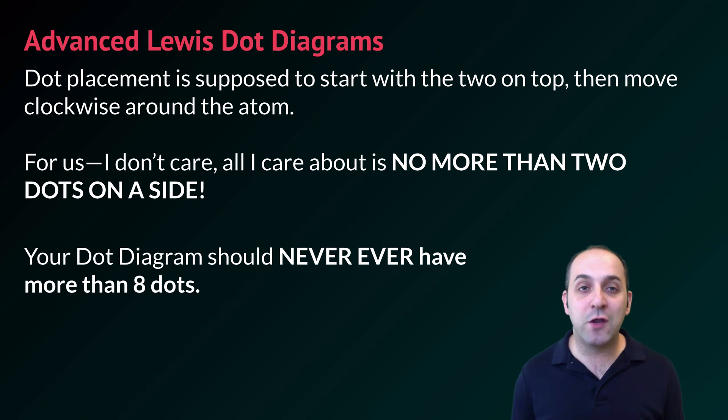Your dot diagram should never have more than eight dots. No element on the periodic table has more than eight valence electrons. If you find yourself putting down more than eight dots, something has gone horribly wrong. You're making a mistake.